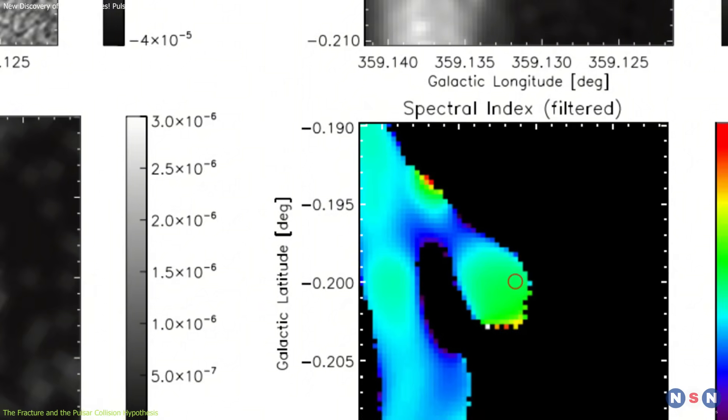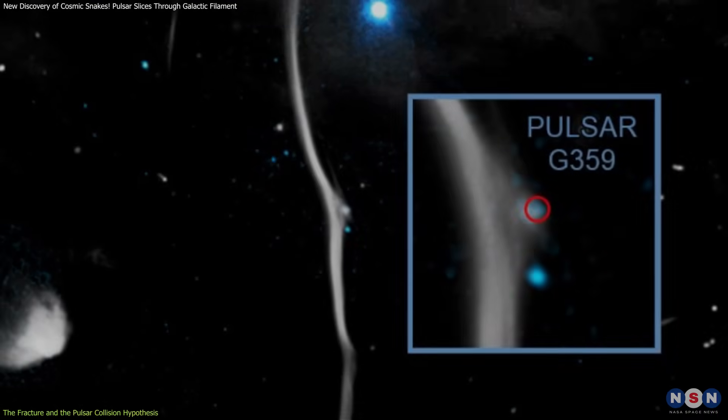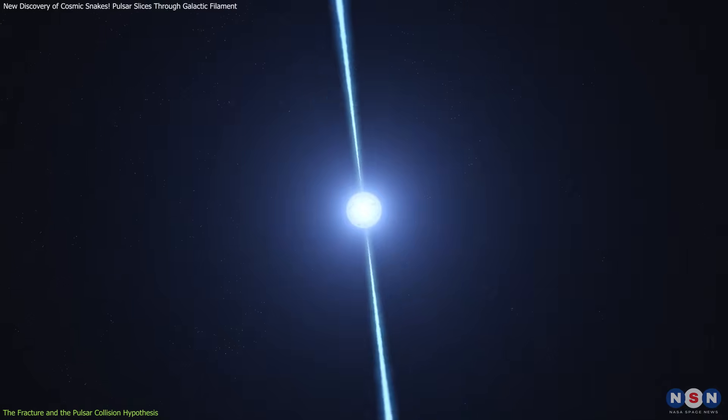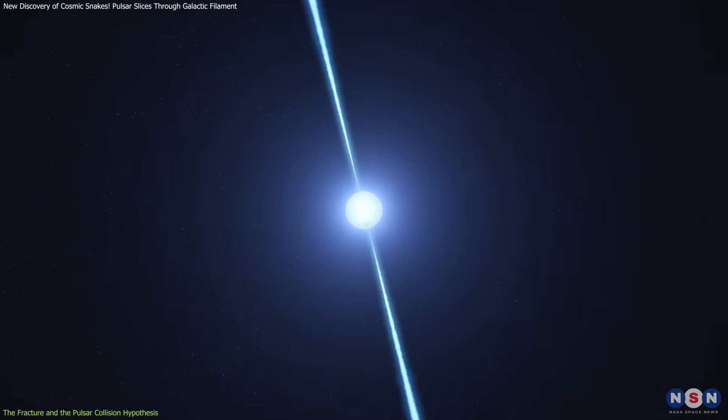Observations using Chandra and Meerkat identified a strong source of X-rays and radio waves exactly at one of the filament's kinks. This wasn't a coincidence. The evidence strongly suggests that the pulsar slammed into the filament, possibly at speeds exceeding two million miles per hour.